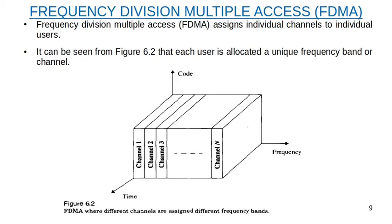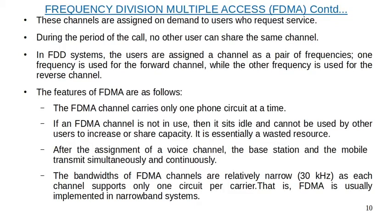Frequency division multiple access assigns individual channels to individual users — each user gets a dedicated channel. The total available bandwidth is divided into different channels, and one user uses one channel for communication. Channel assignment can be fixed or dynamic. In fixed channel assignment, one user is assigned one frequency channel. In dynamic allocation, there is a pool of channels; when a user requests a channel, one is assigned from the pool and returned after communication ends.